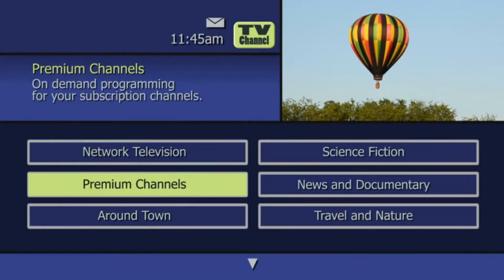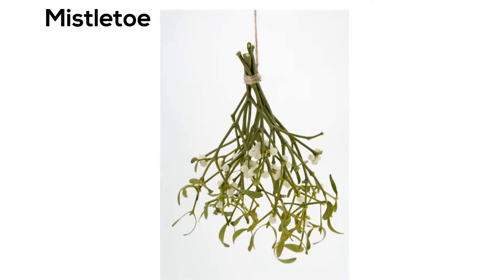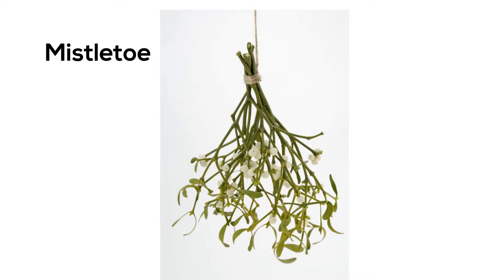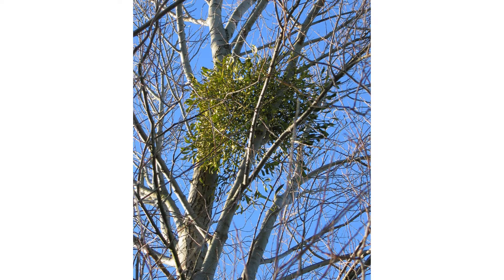So let's take a look at a couple of parasitic plants. First, mistletoe — you know, the stuff you stand under? This plant you will see high in trees is actually a parasite. Mistletoe will attach to the host tree or shrub, and then extract water and nutrients from the host plant. Not very nice.